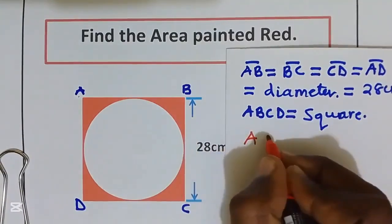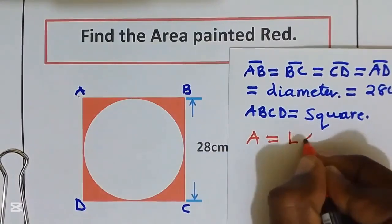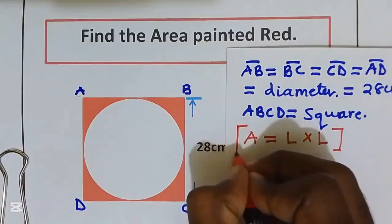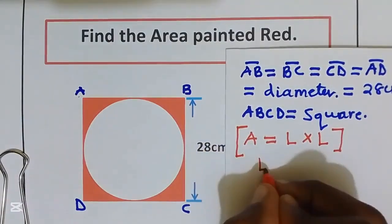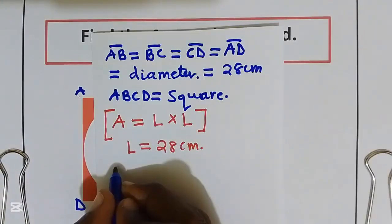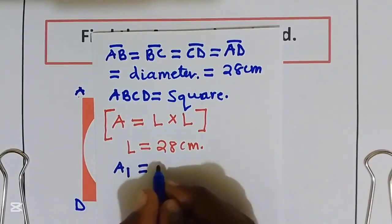Area of a square is given by length multiply by length. Our length is equal to 28 cm.